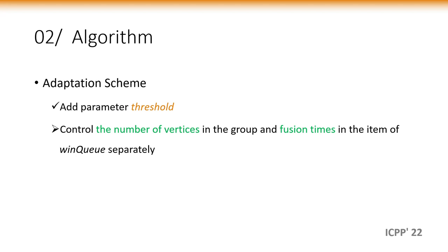We add thresholding to the input parameters. This threshold parameter controls the number of vertices in the group and the fusion times in window queue separately. By adjusting the threshold, the correctness of the matrix multiplication in MESA can be guaranteed on different hardware resources constraints. That's what we need to solve the second challenge, a balance between efficiency and resources.